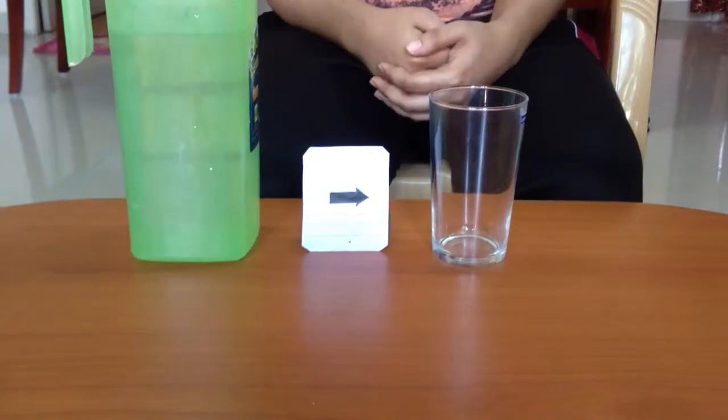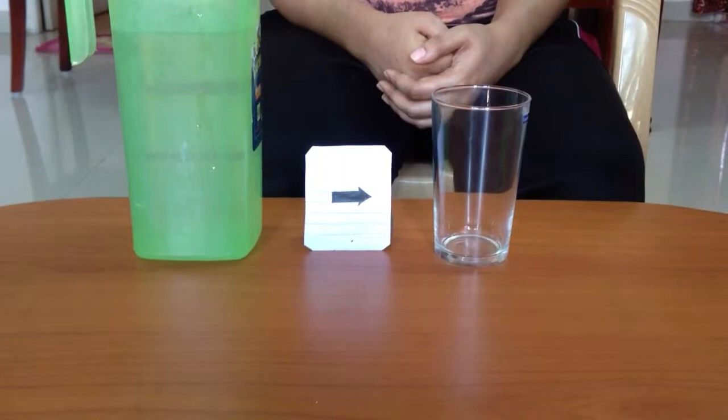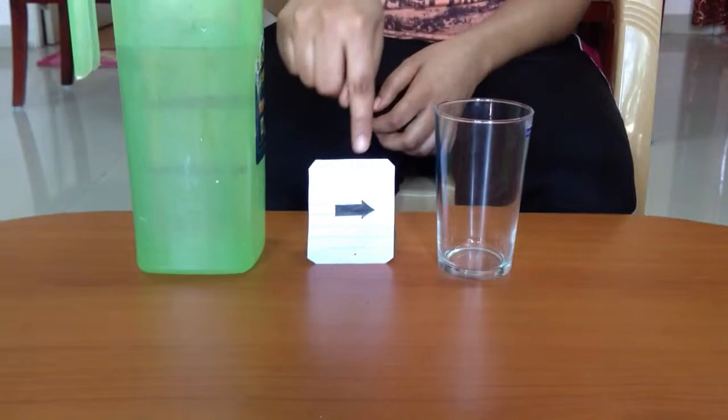In this activity we will demonstrate how a glass filled with water can act as a convex lens. For this activity we need a glass, paper with an arrow drawn on it pointing right, and water.